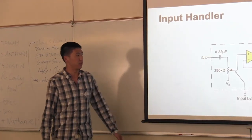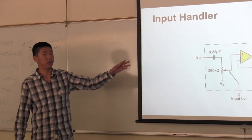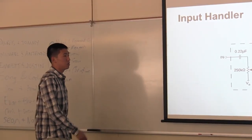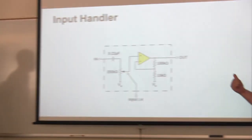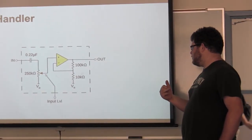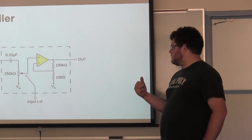So the guitar output impedance is really high and the guitar analog signal is a voltage signal with a really small current. So we decided to input that signal through an input handler, through an amplifier, and that resistor network will buffer the current.